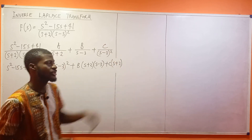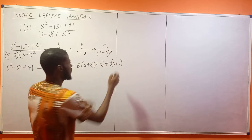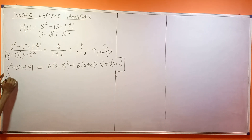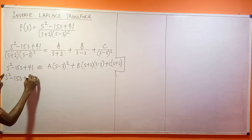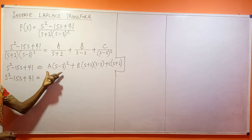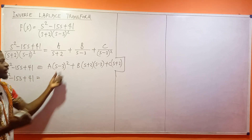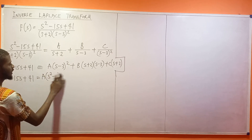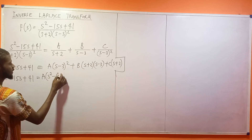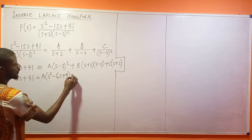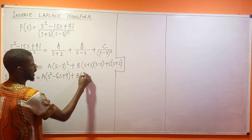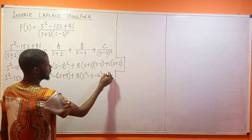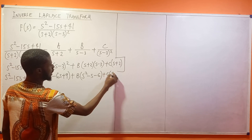You can watch my videos on partial fractions to understand this properly. So this is what I have: s² minus 15s plus 41 equals A(s²-6s+9) plus B(s²-s-6) plus C(s+2), after opening all the brackets.